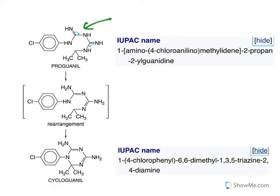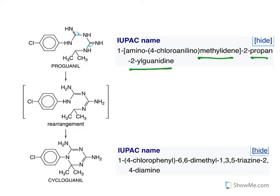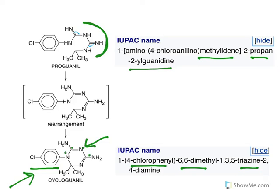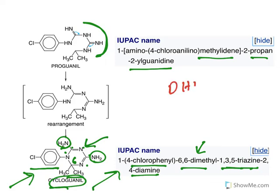Proguanil contains a guanidine group — it is a guanidine derivative. It has a 4-chloro-anilino ring and the full name includes methylidene-2-propane-2-yl guanidine. It cyclizes to give cycloguanil, which contains a triazine ring. The IUPAC name of cycloguanil is 4-chlorophenyl-6,6-dimethyl-1,3,5-triazine-2,4-diamine — at the sixth position two methyl groups are present, and at the second and fourth positions two amine groups are present.